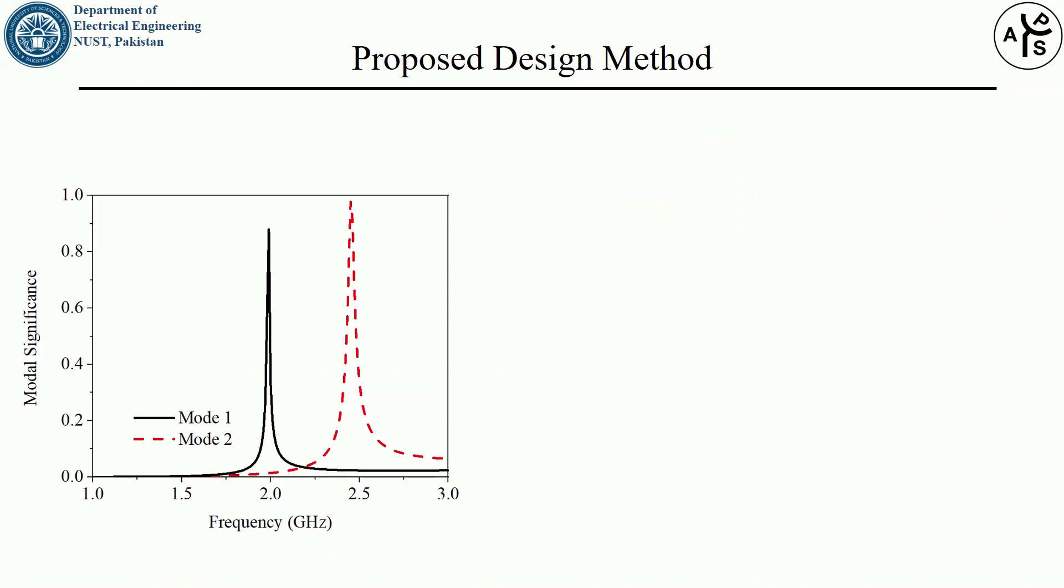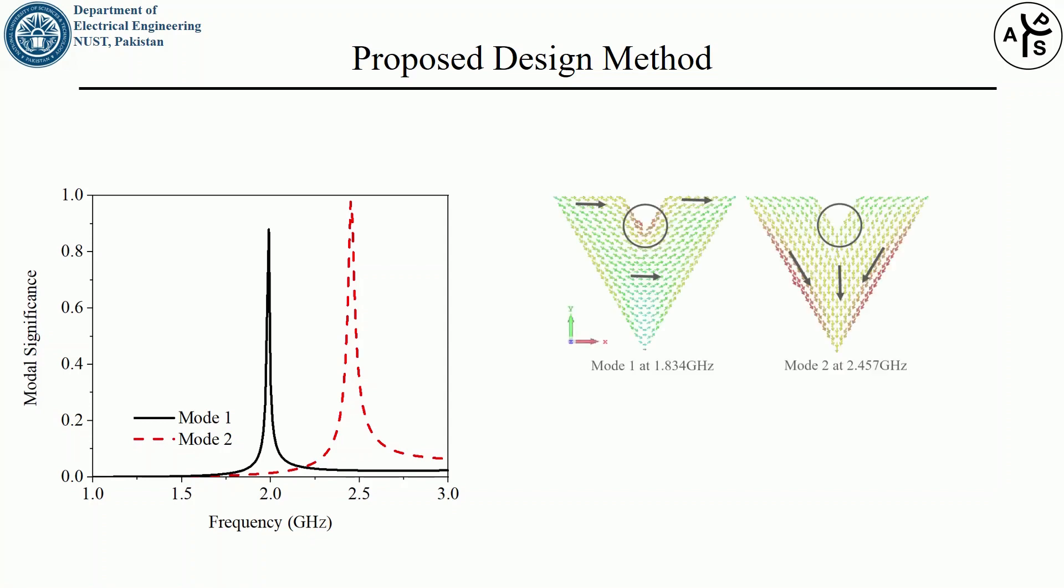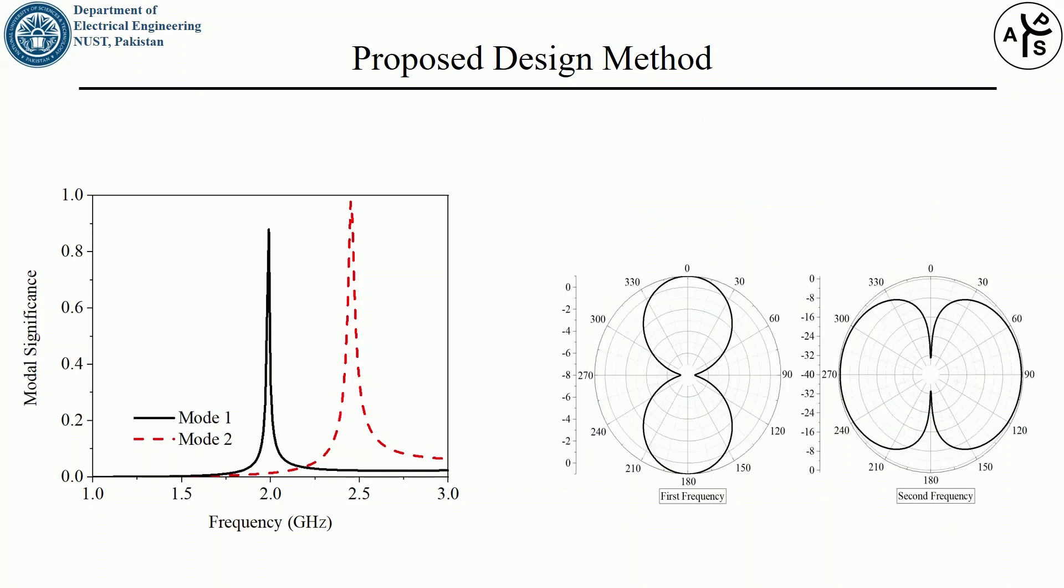This is the modal significance graph for one of the iterations of the slotted structure. As you can see, mode 1 moved to a lower resonant frequency while the frequency of mode 2 is slightly affected. Now the modes are excited at different frequencies but retain fundamental current symmetries, radiations and orthogonal polarizations.